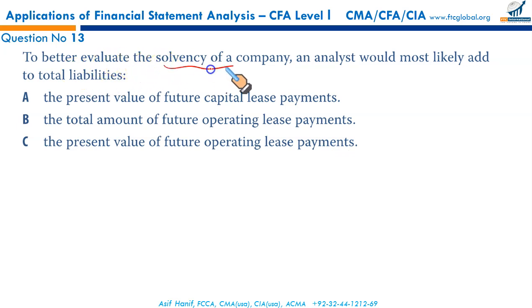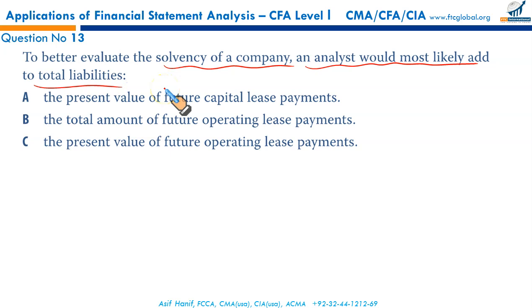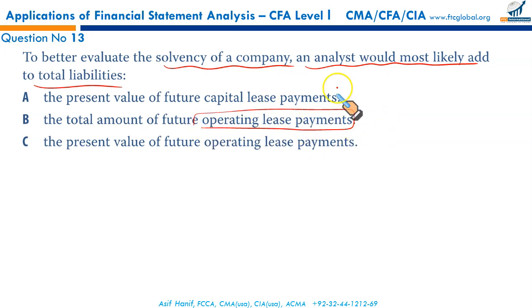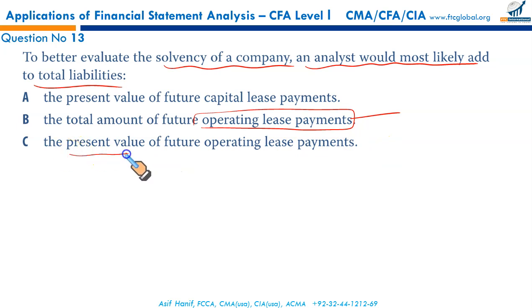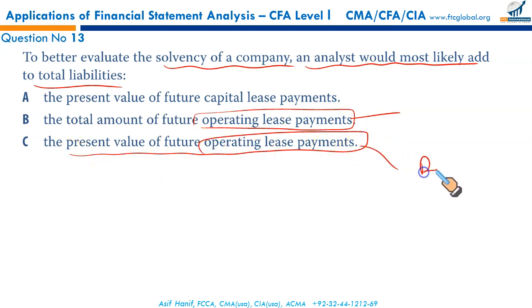To better evaluate the solvency of a company, an analyst would most likely add certain items to total liabilities. That makes C the correct option.